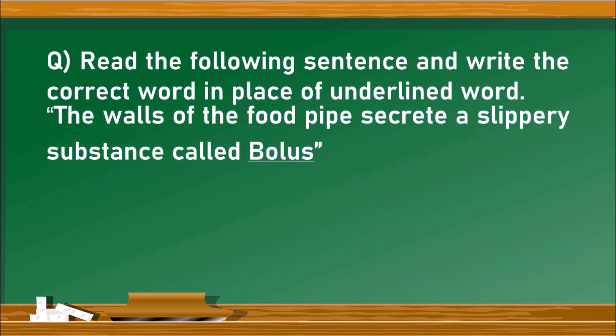Next question. Read the following sentence and write the correct word in place of underlined word. The walls of the food pipe secrete a slippery substance called bolus. Here, the underlined word bolus is not the right word because the walls of the food pipe secrete a slippery substance called mucus, which makes the food travel smoothly in the esophagus and other food canal.